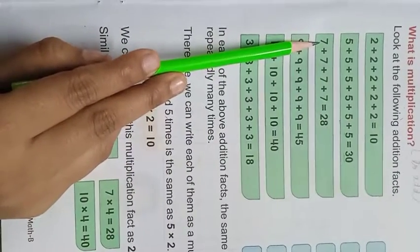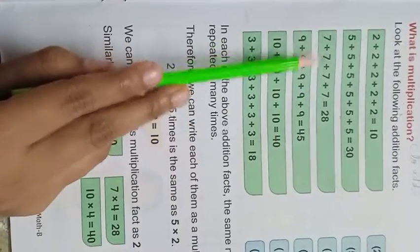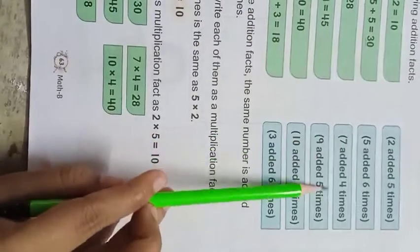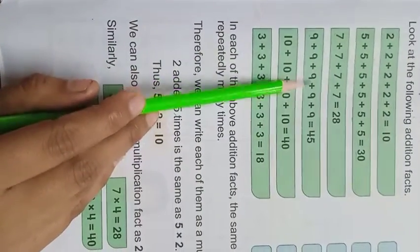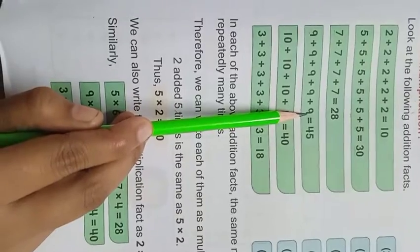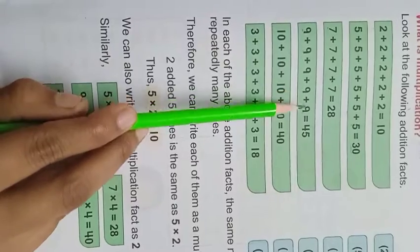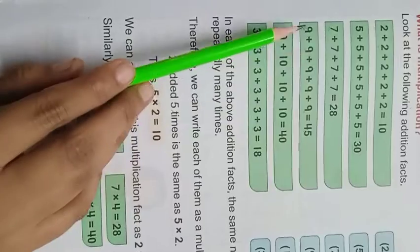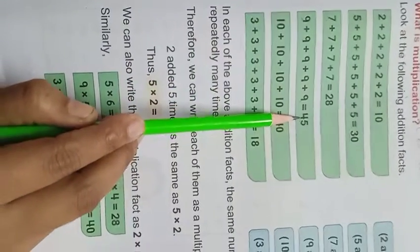Seven ko hamne kitne times add kiya hai? One, two, three, four. Seven ko jab hum four times add karte hain, toh equal hota hai twenty-eight. Seven added four times. Nine, nine, nine, nine, nine and nine. Nine ko kitni baar add kiya hai? Five times. Nine five times are forty-five. Nine ko five times add karne par hame mila forty-five.